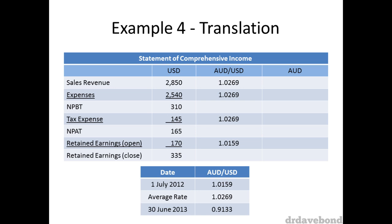Whilst arguably you could identify the actual exchange rate for each individual sale and expense, realistically it's not that practical, and paragraph 40 allows you to use average rates. Retained earnings is an equity item and would generally use the open rate for the period. The second thing to do is to calculate the Aussie dollar amounts for each of these items and then total them.